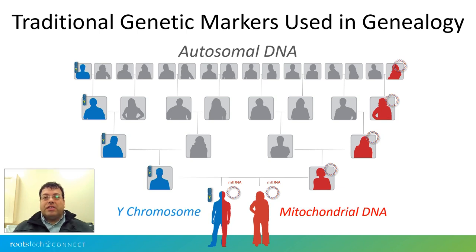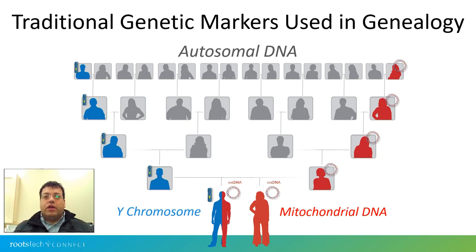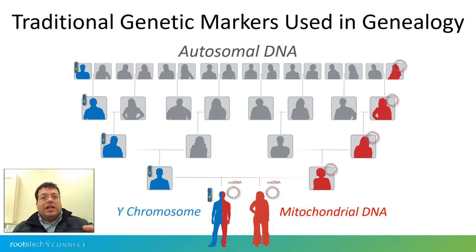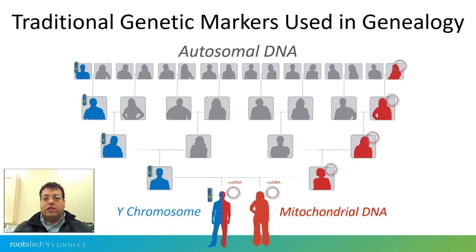Knowing about these three types of markers and how they are inherited is very helpful because, as we talk about Native American ancestry, we can use each one of them to discover what we have. This presentation is divided in two parts. The first part provides a scientific and anthropological background — National Geographic style — of how Native American history came about. From there we can extrapolate the type of information available through DNA testing via commercial companies, and figure out if we have any ancestry that ties in with this particular part of the world.